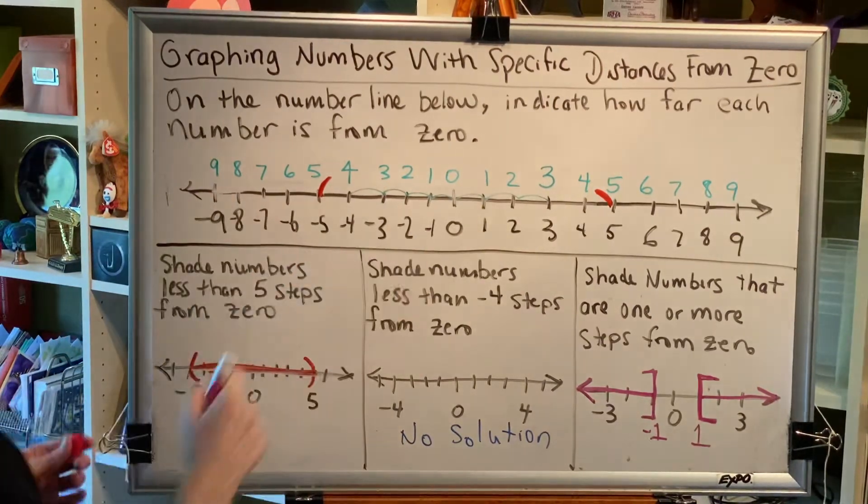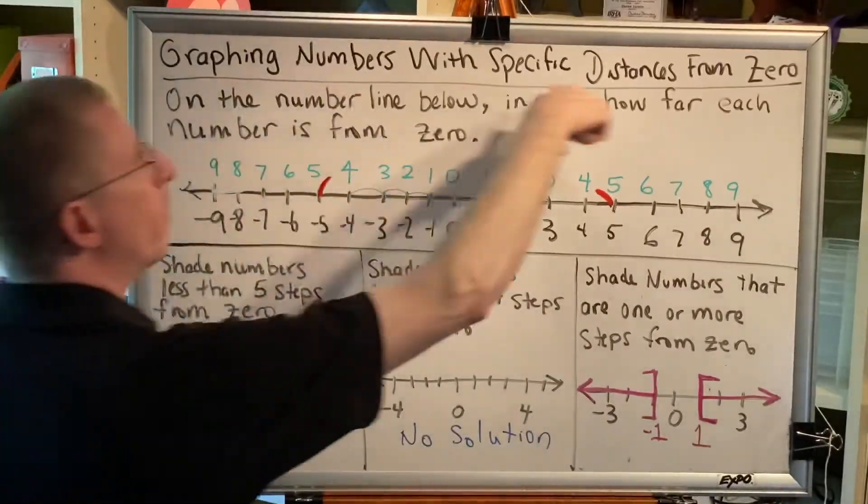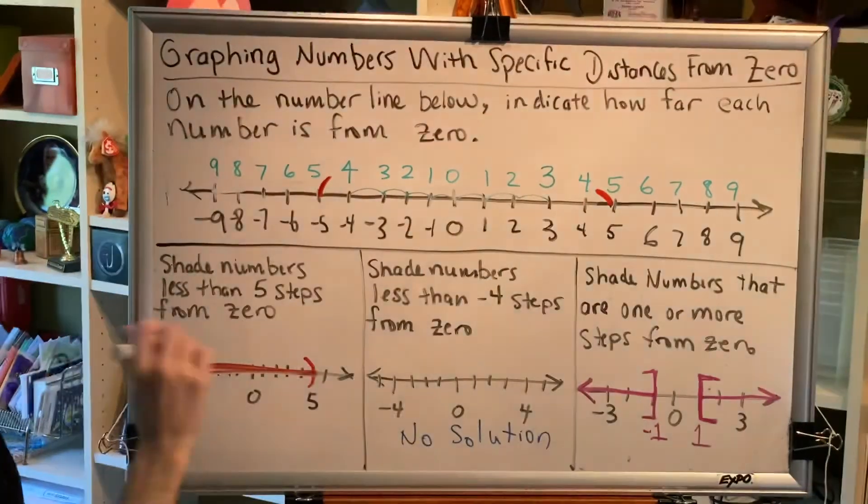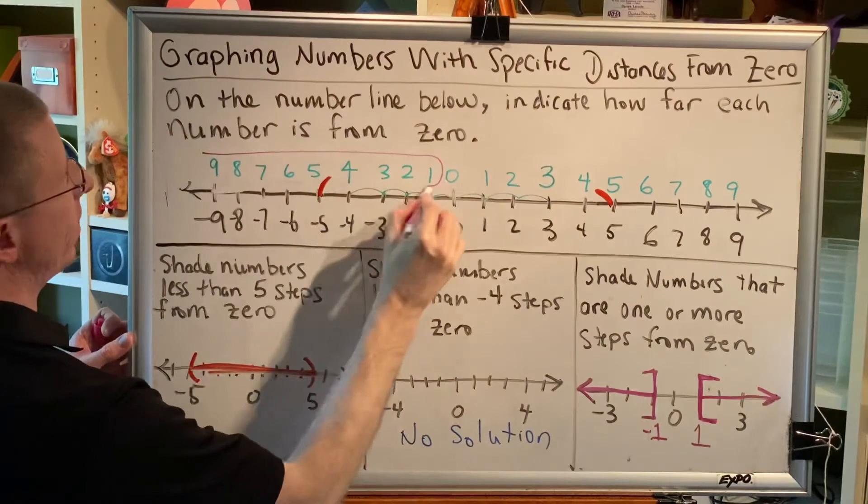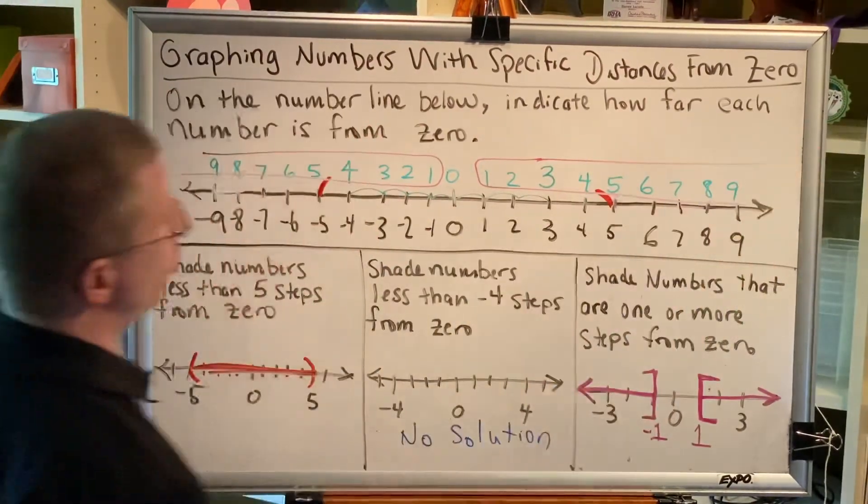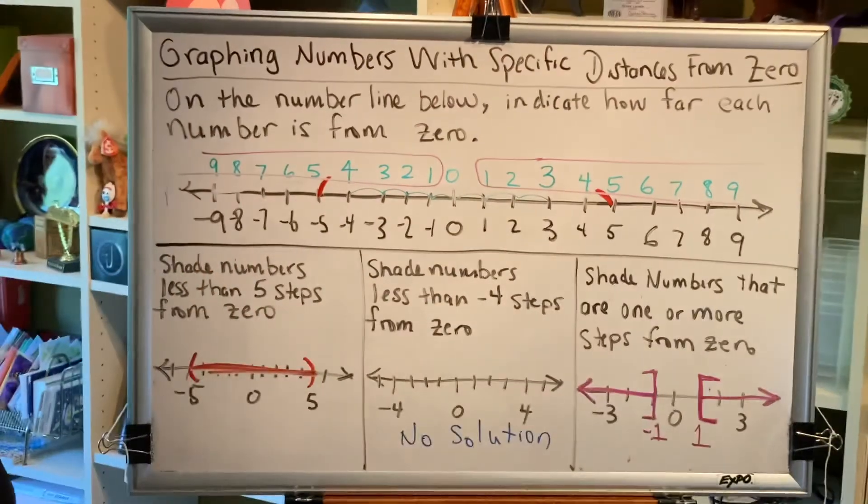We can even see that by looking at our chart up here. Of all of the numbers at the top, which numbers are 1 or more? Well, that would be all of these, and all of these. And you can see we get the same kind of shape that we do on our number line here.